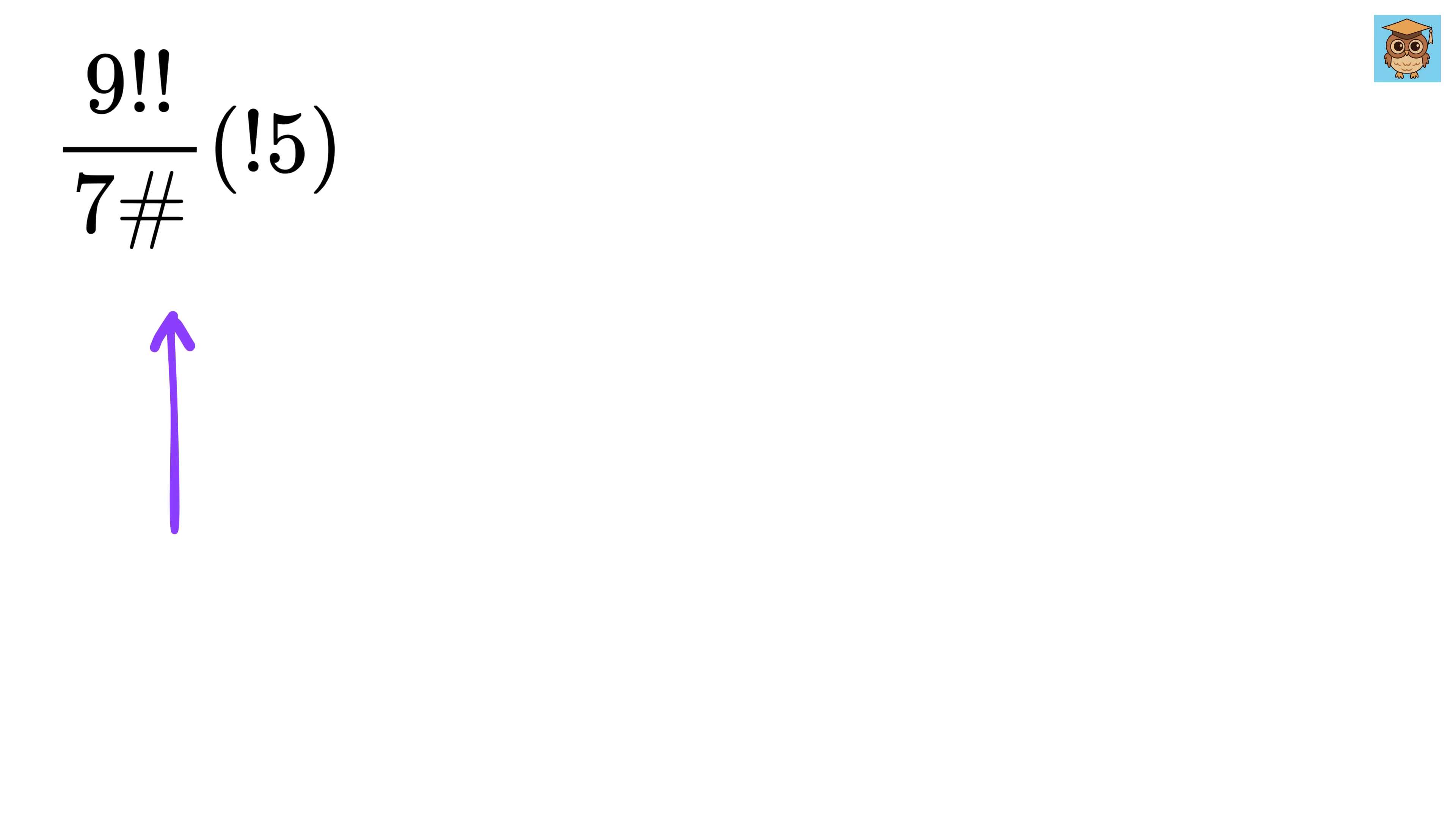We want to find the value of 9 with a double exclamation mark in front of it, divided by 7 with a hash sign in front of it, then multiplied by an exclamation mark just before the number 5.